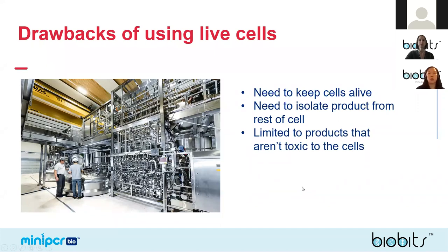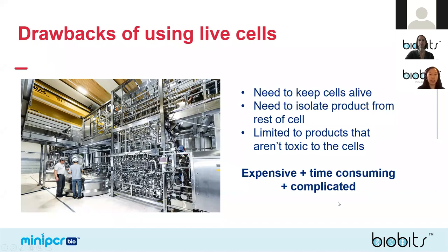There are also limits to what products we can make in cells. Since we need to keep them alive, they can't make things that are too toxic or harmful. Overall, the process of making proteins from live cells can be very expensive, time-consuming, and complicated — it's often limited to research labs or industrial companies with a lot of resources. So the question is: how do we make this cheaper and more accessible?